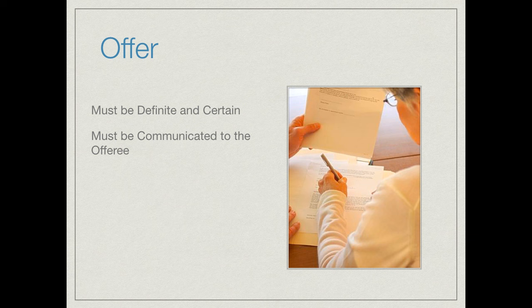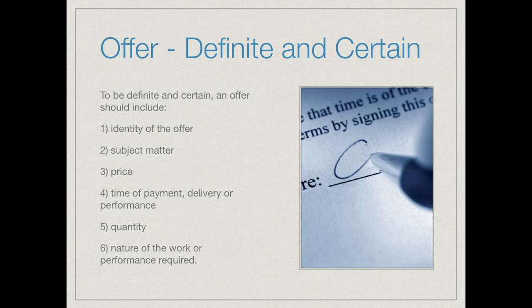I said I want you to cut my grass, and if you cut my grass, I'll give you $100. To have a definite and certain offer, you need to have six things. These six things won't apply to every possible situation, but you really want to look to them when determining whether an offer was valid. First, the identity of the parties — it's me and Mary Jones. Second, the subject matter — I need my grass cut. Third, the price — a hundred bucks. So far, we're doing really well.